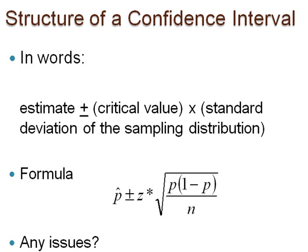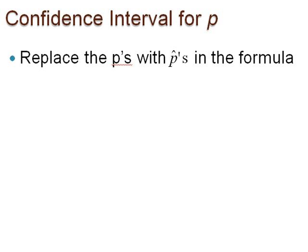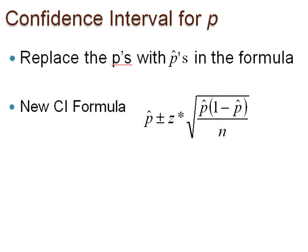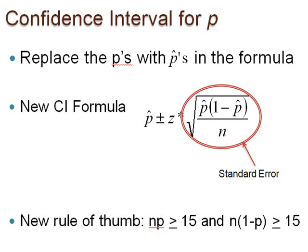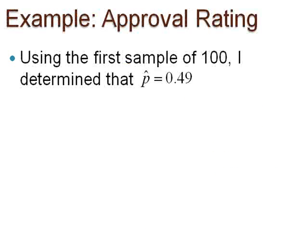The issue is: if we use this formula, we are using the unknown population proportion in the calculation of the standard deviation. To handle this problem, it has been proven that we may use the sample proportion p-hat to estimate p in this calculation. If we make this estimate and use this standard error, we must be more cautious with our calculations. Thus, we could change our rule of thumb to np greater than or equal to 15 and n(1 minus p) greater than or equal to 15. Here is the confidence interval formula. Using the first sample of 100 students, I determined my p-hat is 0.49. Construct a 95% confidence interval for the proportion.